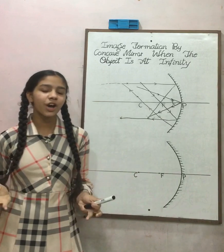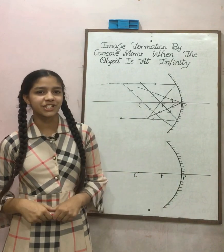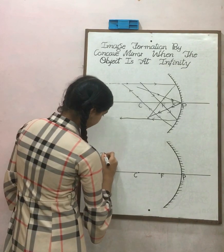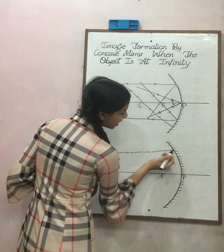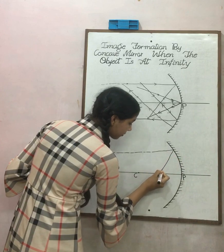Now, let's draw the ray diagram of the object, which is placed at infinity. For example, sun. A ray of light parallel to the principal axis comes and strikes at the mirror. Then it reflects back and goes from the focus.